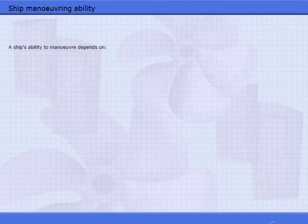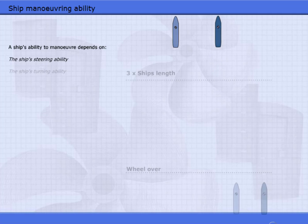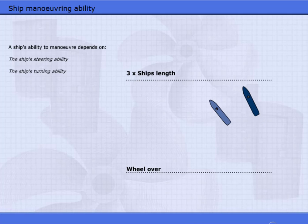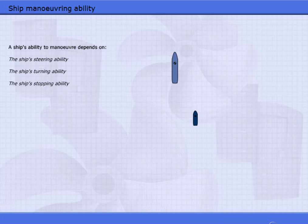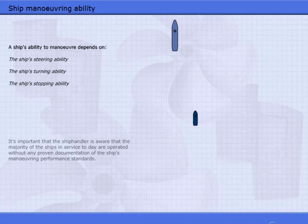A ship's ability to maneuver depends on the ship's steering ability, the ship's turning ability, the ship's stopping ability. It is important that the ship handler is aware that the majority of the ships in service today are operated without any proven documentation of the ship's maneuvering performance standards.